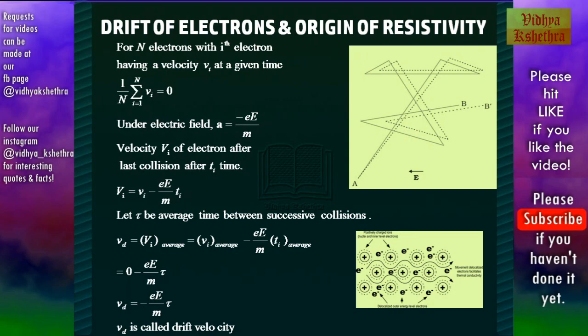Now, velocity v'i = vi - eE/m × Ti. Now let τ be average time between successive collisions. And this Ti may be greater than τ or lesser than τ. So in order to find the drift velocity, we have to find the average.